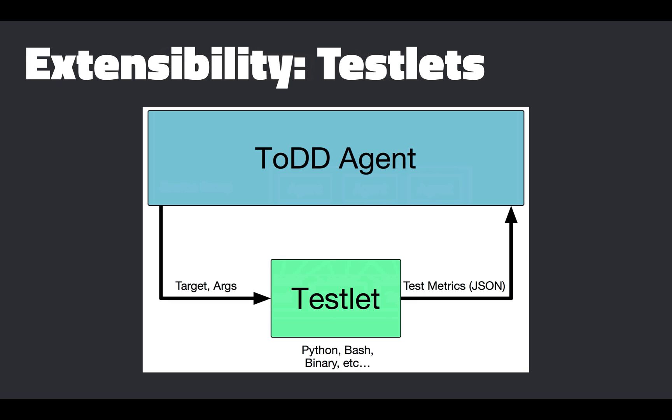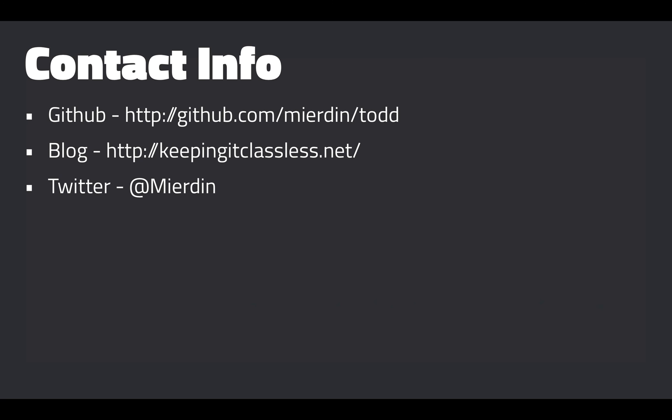There will be a set of default supported testlets distributed with TODD, but if you want to define your own, you can write them and put them in the testlet directory on the server, and the server will distribute them to all agents. With that, thank you for watching. I'll be making another video with an actual working demo of TODD — there should be an annotation on the YouTube video where you can click and go to that video. If you'd like to see the code, you can go to the GitHub repository at github.com/mirrdin/TODD. You can always reach me at my blog keepingitclassless.net or on Twitter as mirrdin.